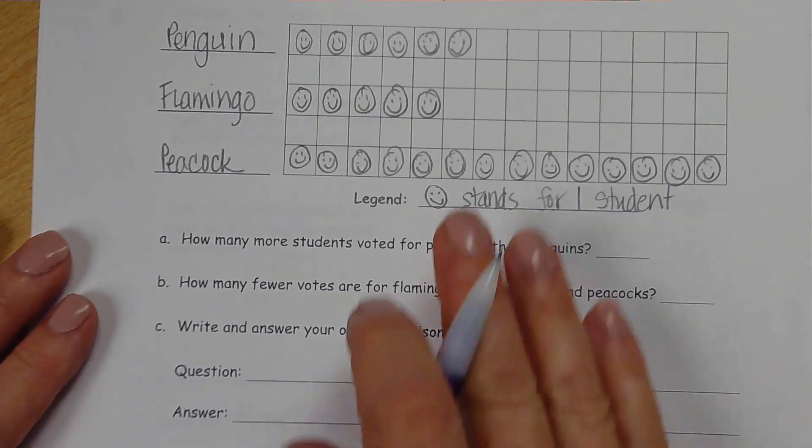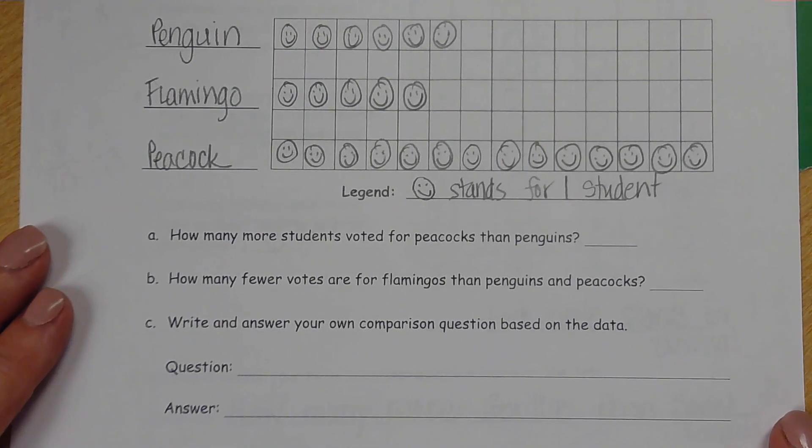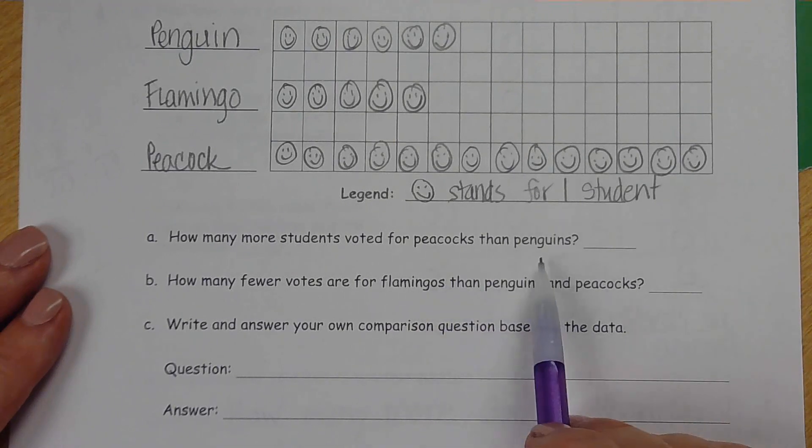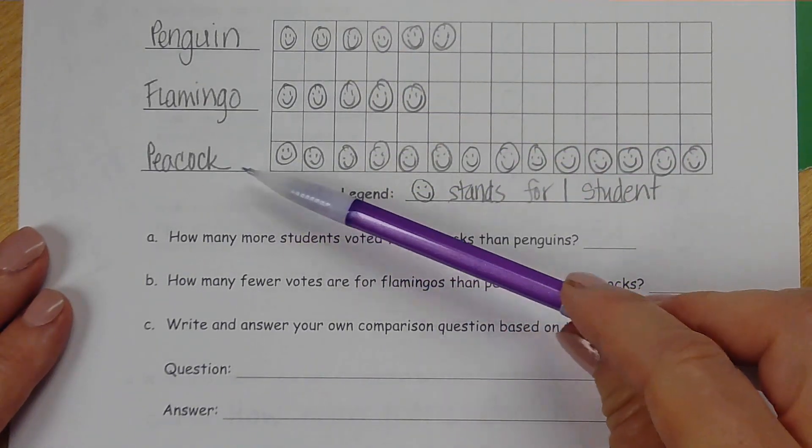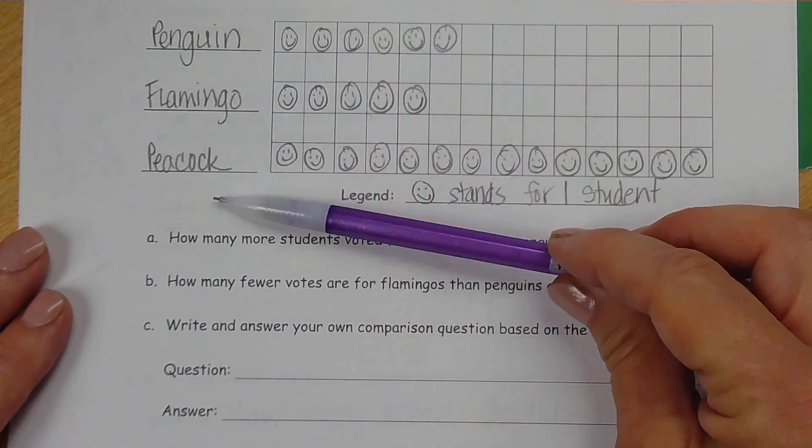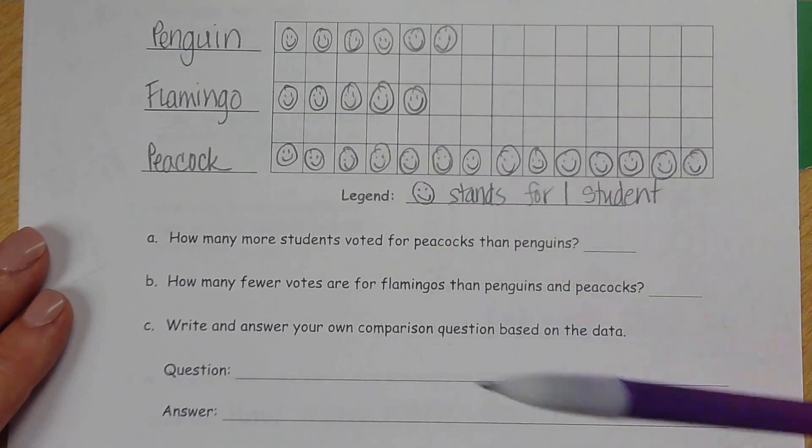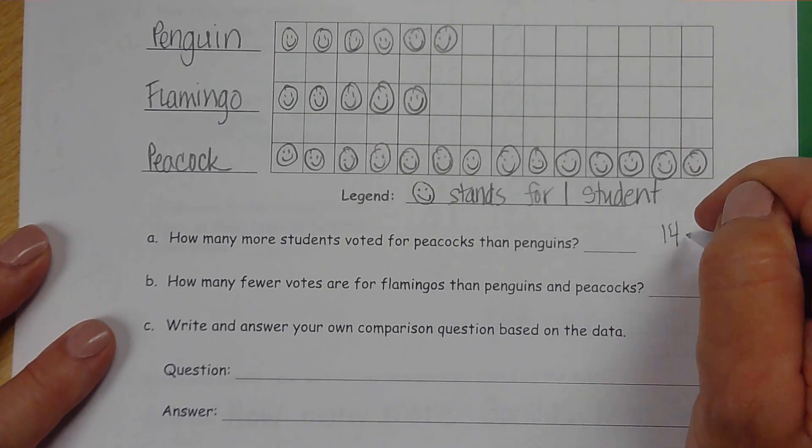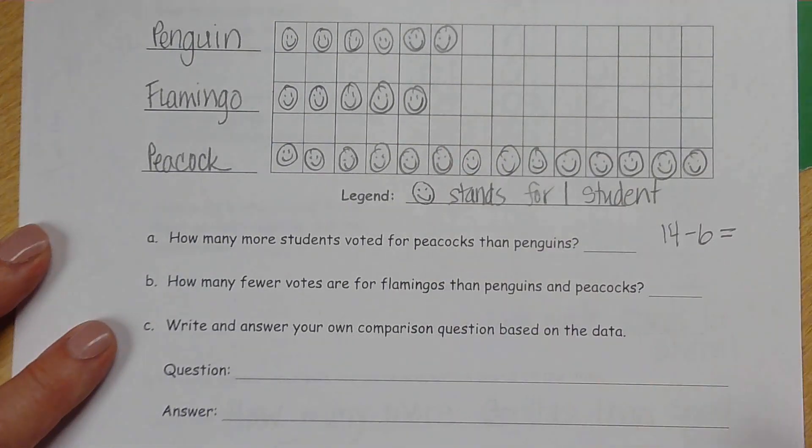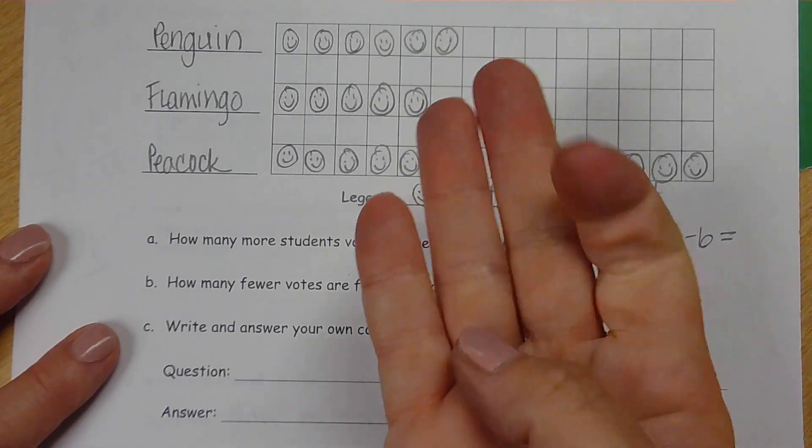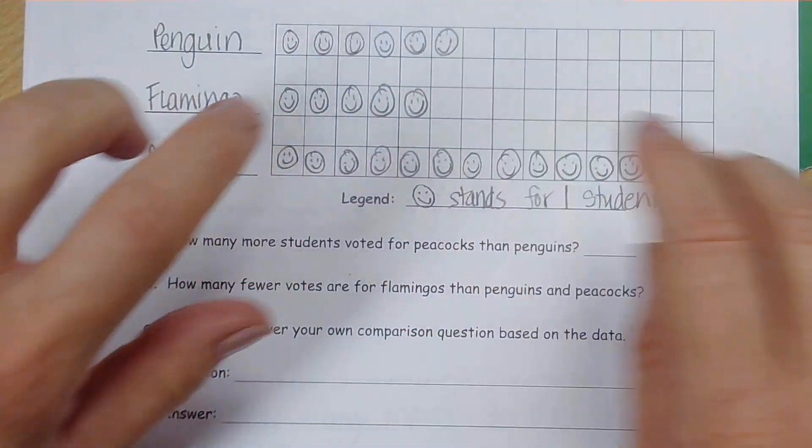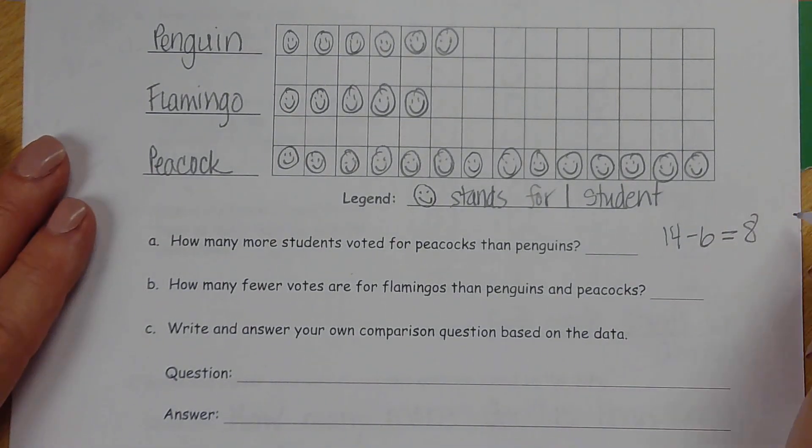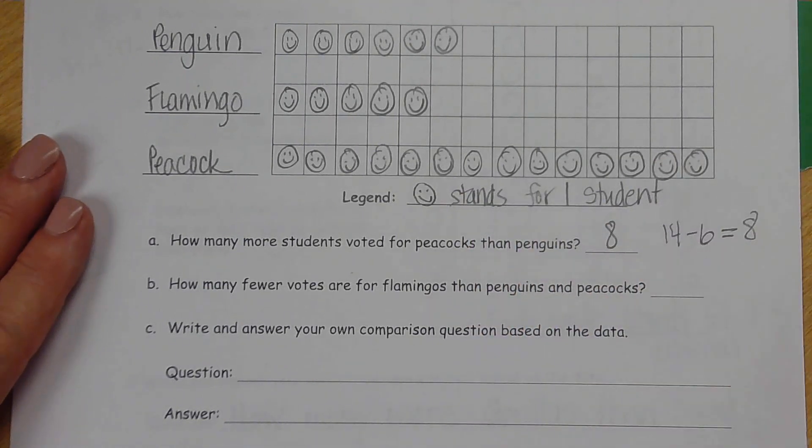How many more students voted for peacocks than penguins? Again, we are comparing these two numbers. In this case, they're asking how many more peacocks than penguins, but it would be the same if they said fewer. We are comparing six and fourteen. We can subtract fourteen minus six, we can count the difference between them, we can count up from six to fourteen. Six, seven, eight, nine, ten, eleven, twelve, thirteen, fourteen. How many is that? Eight. Fourteen minus six equals eight. So there were eight more people that voted for peacocks than penguins.